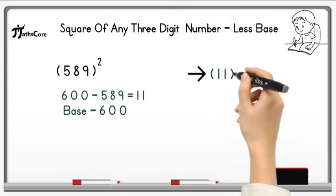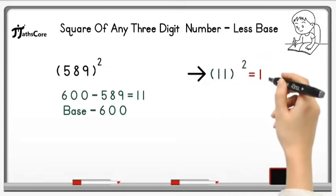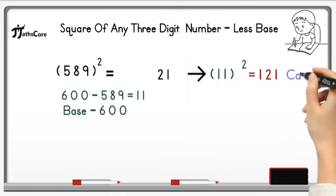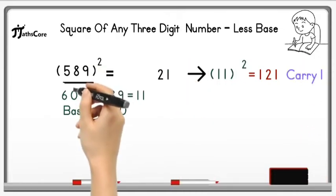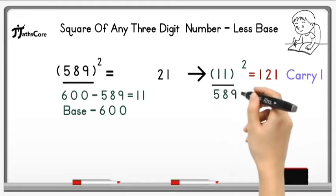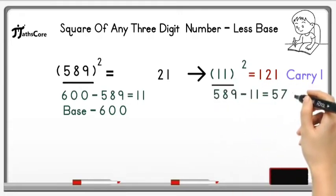Now find out square of 11. 11 square is equal to 121 which is 3 digit number. So write down 21 in a product and take 1 as a carry. After that take whole number 589 here and subtract 11 from it. So 589 minus 11 is equal to 578.